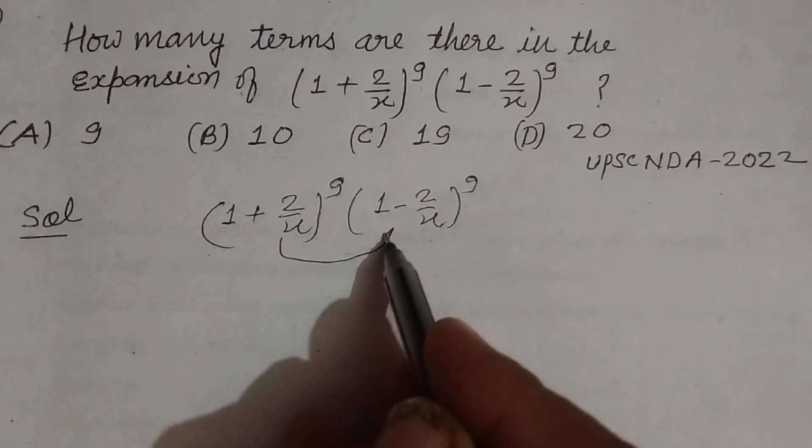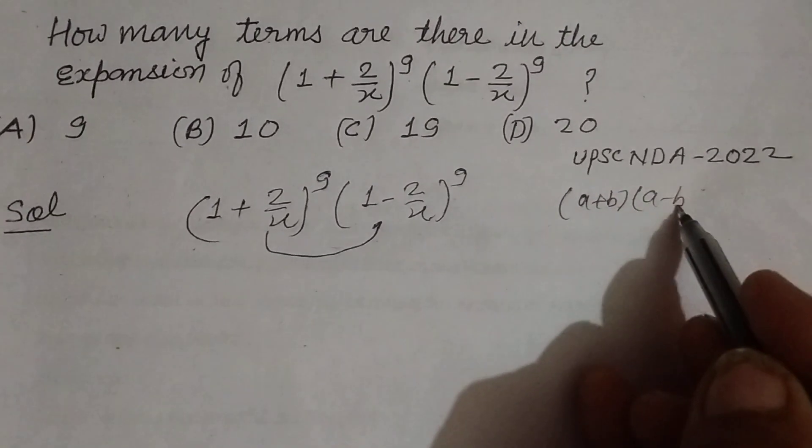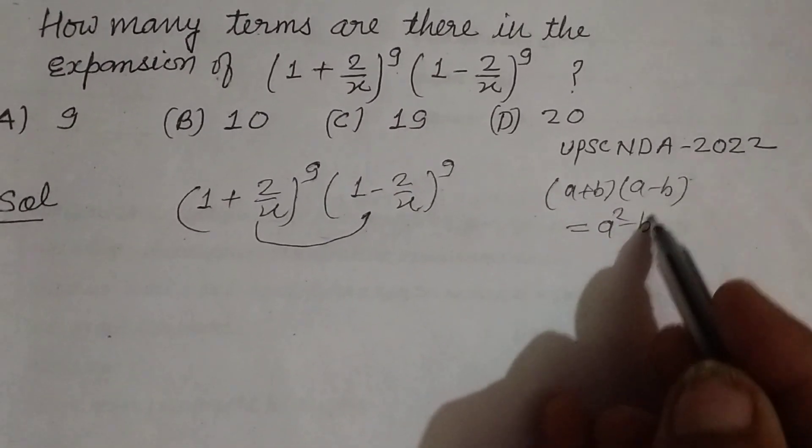This is in the form of (a + b)(a - b), therefore it becomes a² - b².